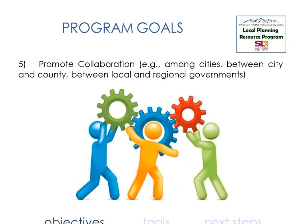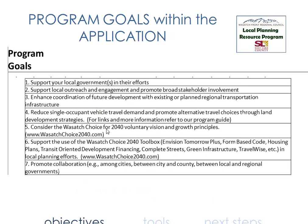Goal five is collaboration between governments — it could be the city next to you, thinking about a corridor that you share. Those kinds of planning needs are difficult for individual local governments to address, and so that's part of the program goals as well. These are all listed within the application form. There's a one-page write-up where you can explain how your application meets those program goals. You don't have to hit every single one — just talk about those your application resonates with.